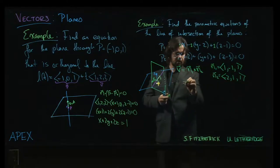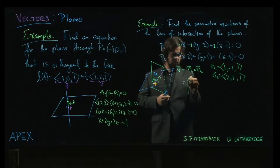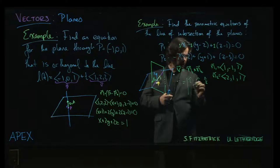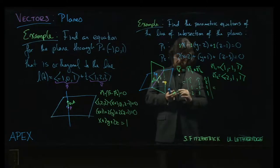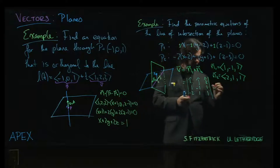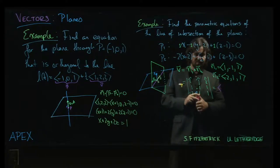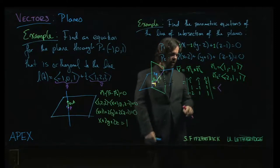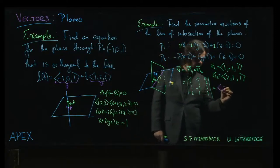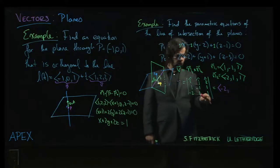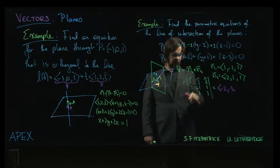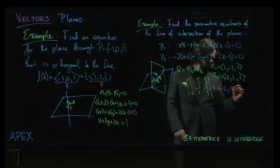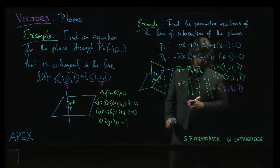So we can proceed to compute the cross product. So we have i, j, k, 1, minus 1, 1, minus 2, 1, 1. And again, I'm just going to, once you get a bit of practice with these cross products, you can start doing them pretty fast. Minus 1 minus 1 is minus 2. For j, I have 1 plus 2 is 3, but j comes with that minus sign, so it's minus 3. For k, 1 minus 2, minus 1.